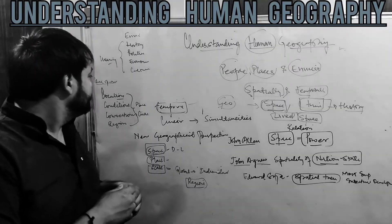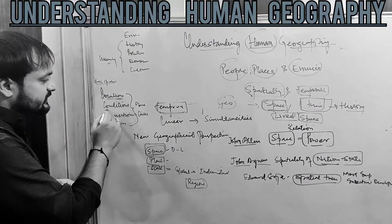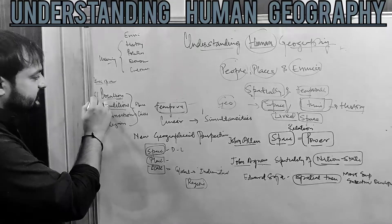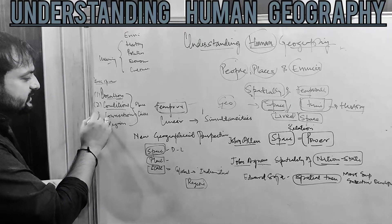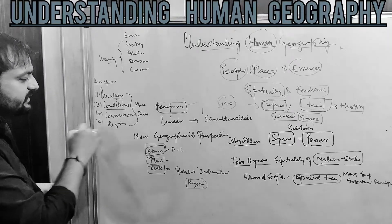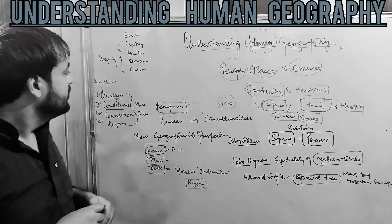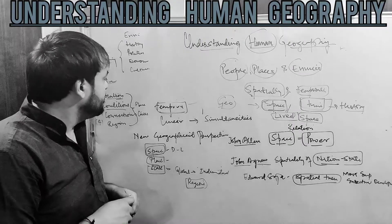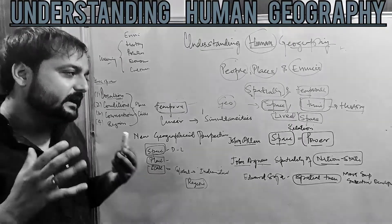To think spatially, there are four conditions: one is location, second is conditions, third is connections, and fourth is region. These four aspects of thinking spatially matter.